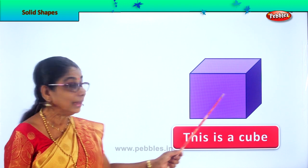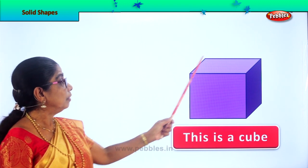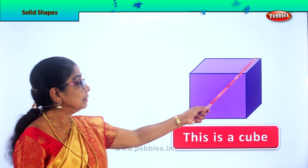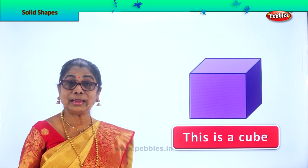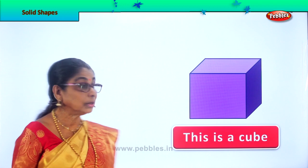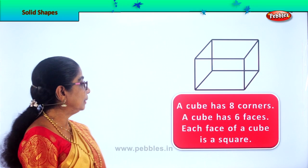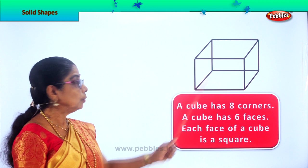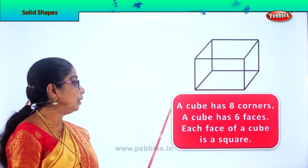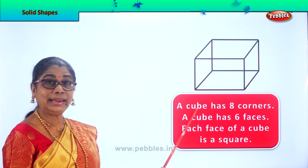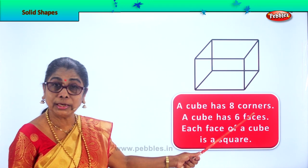Now, look at the corners. One, two, three, four, five, six, seven, eight corners. You look at the cardboard box that is in the shape of a cube. Let us read. What is this? A cube. A cube has eight corners.